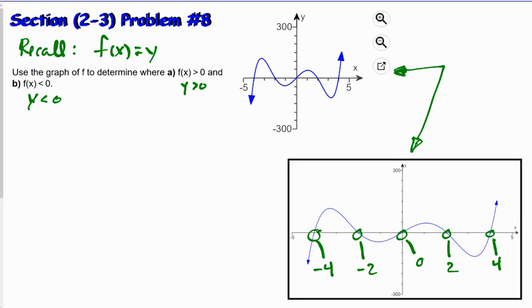The regions where the graph is above the x-axis, I'm tracing in green. We see this region is from negative 4 to negative 2, this region is from 0 to 2, and this region is from 4 to positive infinity.